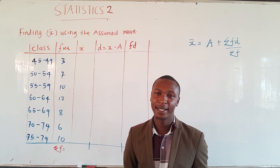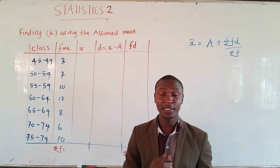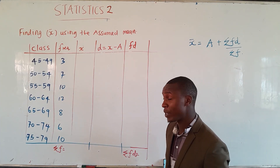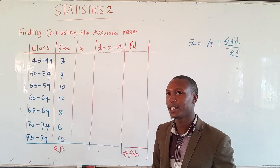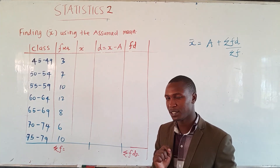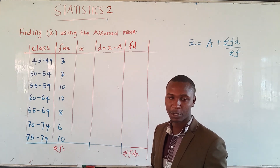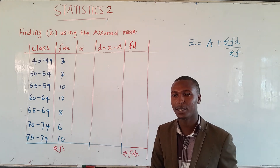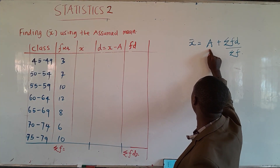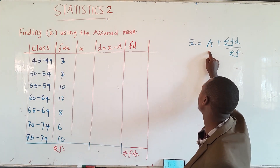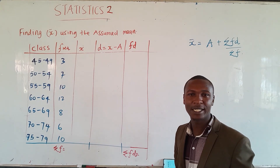Welcome. In this video we are going to get to what we call Statistics 2. In Statistics 2 we are going to start by how we can find the mean of a given data using the assumed mean. We are going to find another way to find the mean or x-bar: x-bar equals a plus the summation of fd divided by the summation of f.